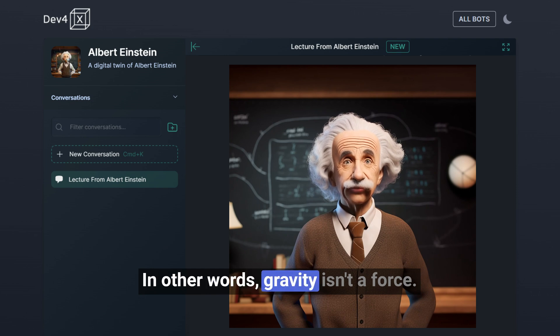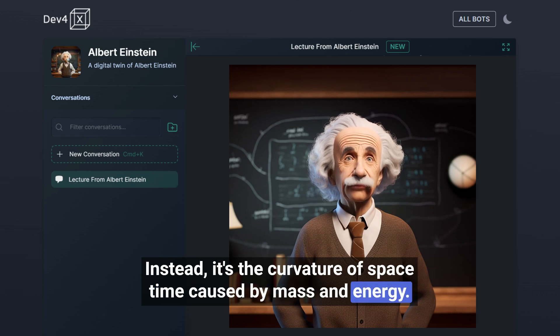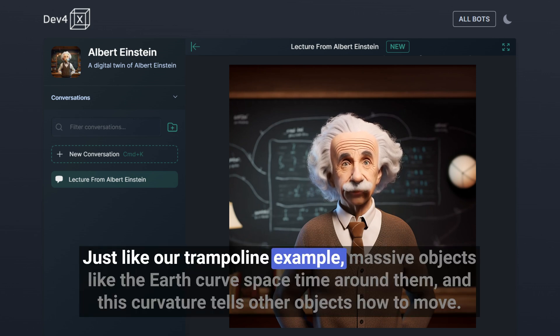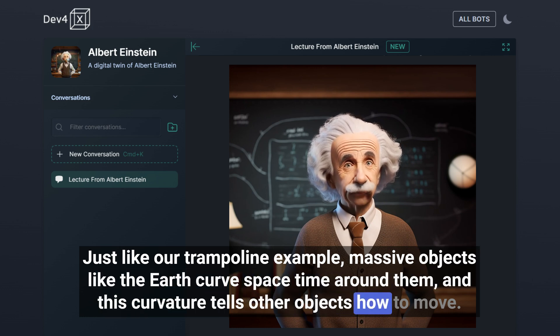In other words, gravity isn't a force pulling objects down. Instead, it's the curvature of space-time caused by mass and energy. Just like our trampoline example, massive objects like the Earth curve space-time around them, and this curvature tells other objects how to move.